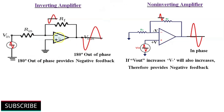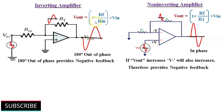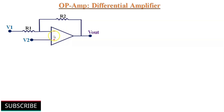So far, we have discussed inverting and non-inverting configurations of Op-Amp. Both these configurations use negative feedback to control gain, and we have already discussed their voltage gain equations. In both these configurations, single-ended input is used while the other input is connected to ground potential. Now we will discuss what happens when we apply input signals to both inputs at a time.